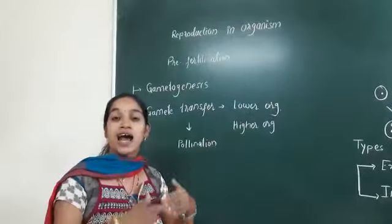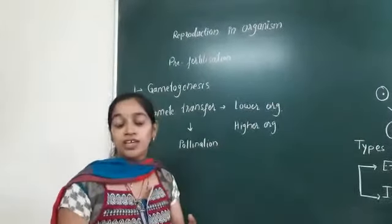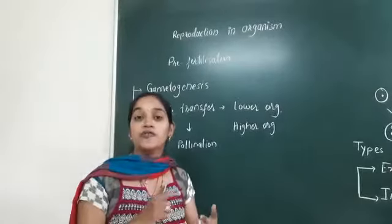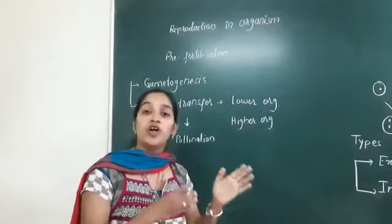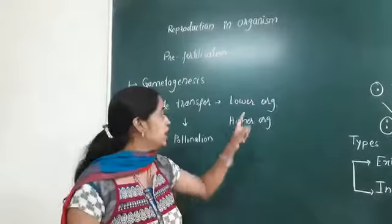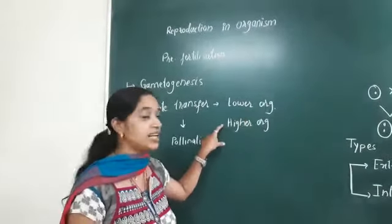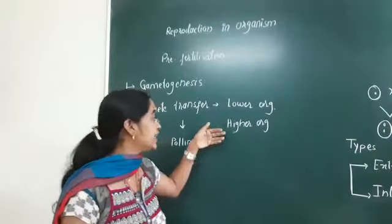In lower organisms, as both the gametes are left into the water and fertilization is by chance of occurrence, the number of gametes produced is more in the lower organism than in the higher organism.